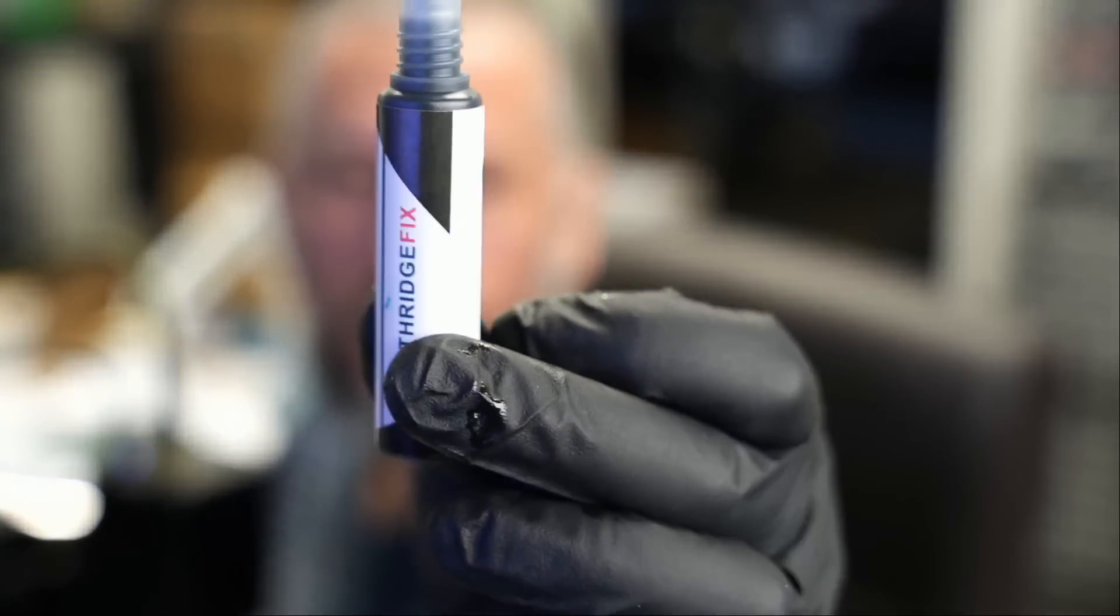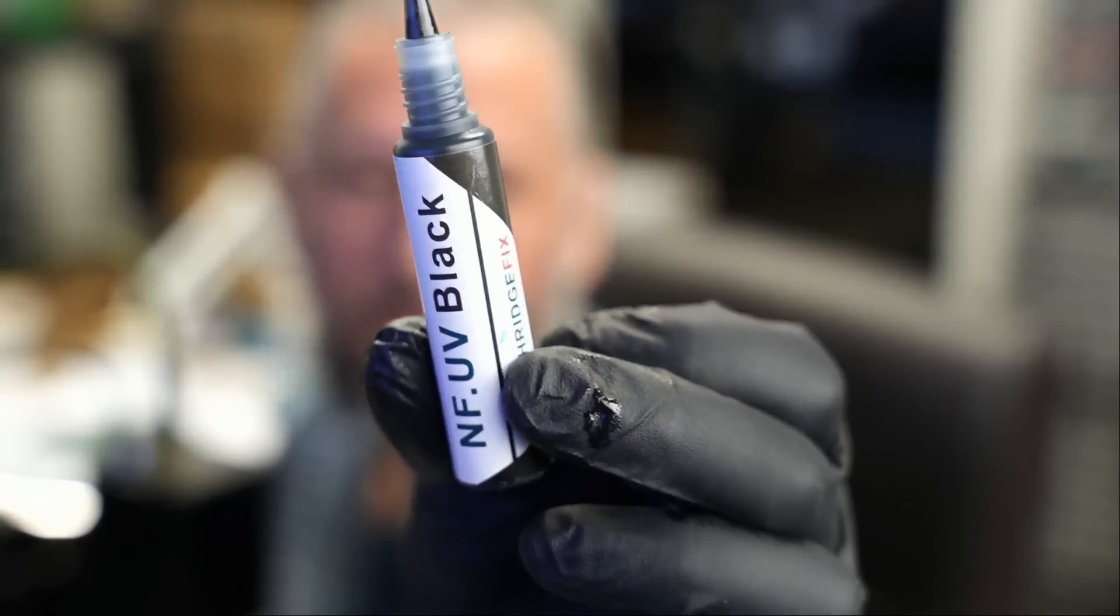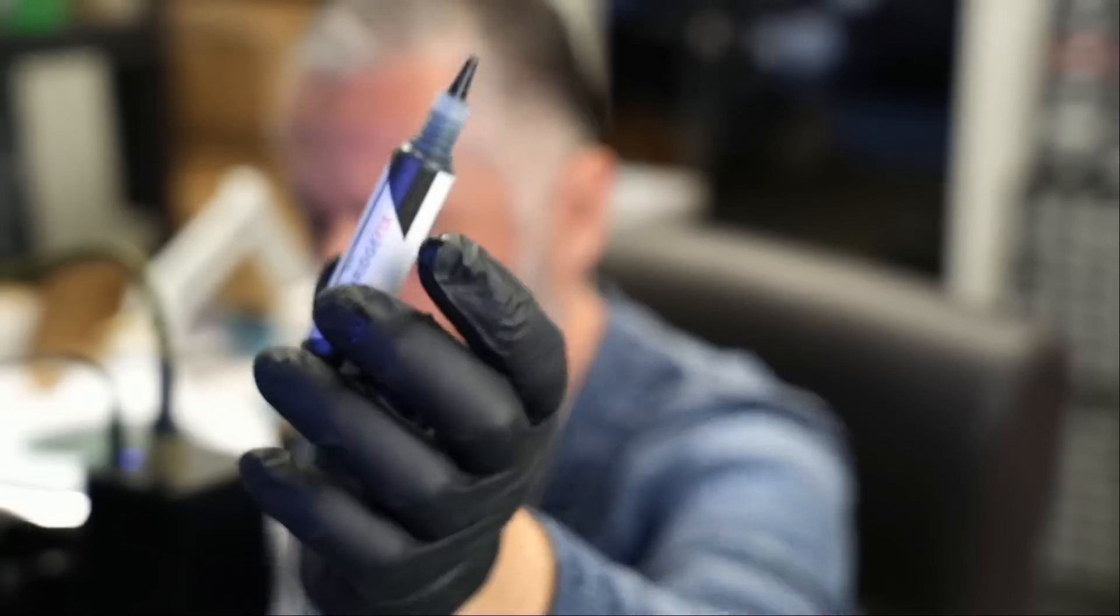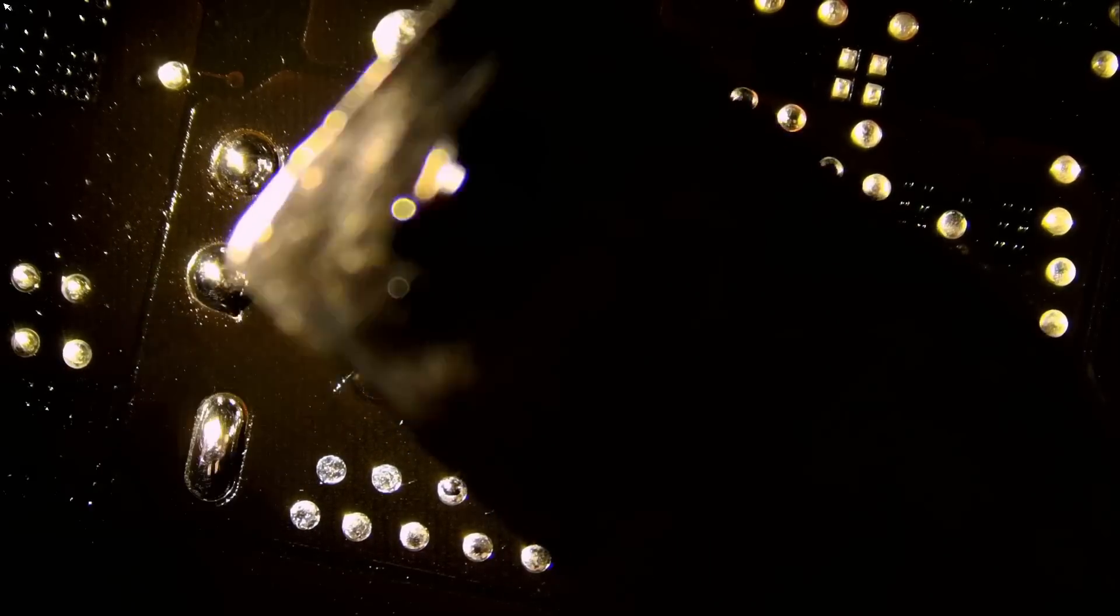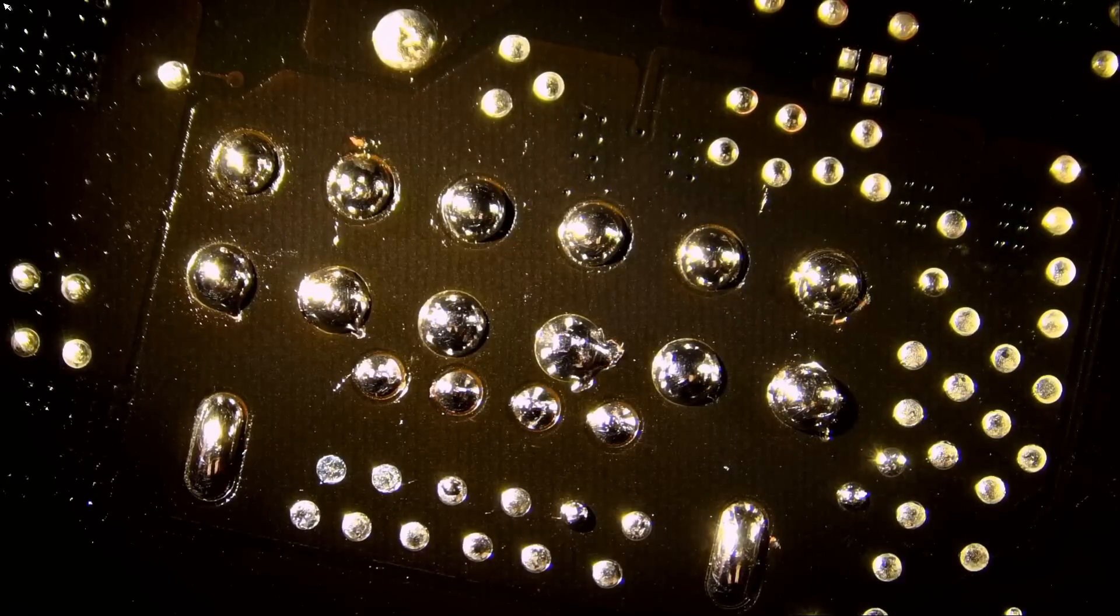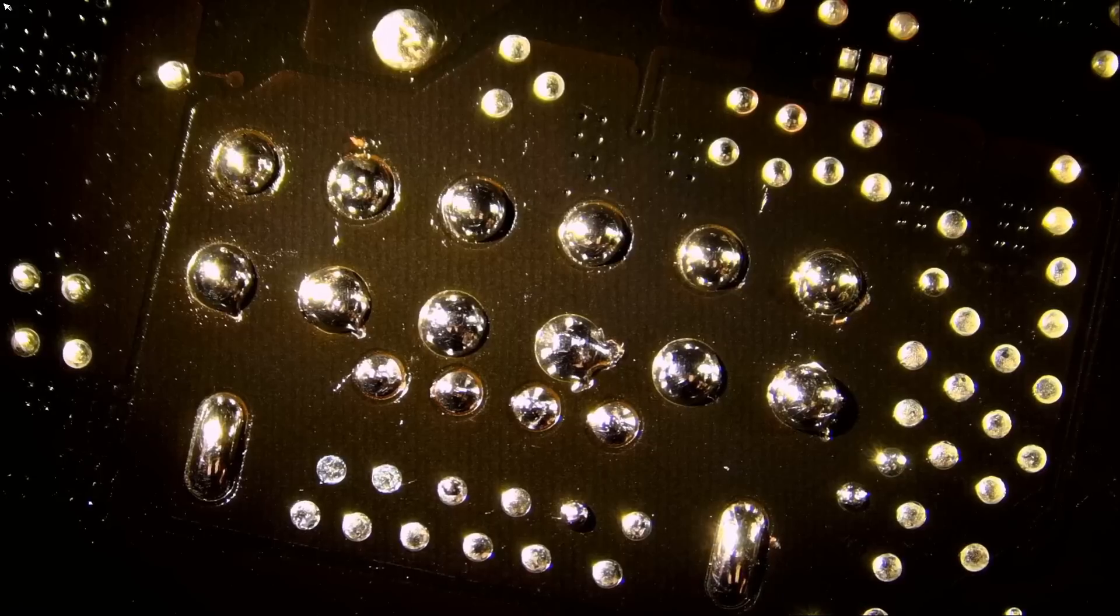So this is the Northridge Fix UV mask. And we have it in green, red, blue, and black. So what we're going to do is apply a tiny bit on this spudger, just like that. I mean I applied a lot, we're not going to use all that. A tiny bit goes a long way. Look, you can cover half the board with a tiny bit.